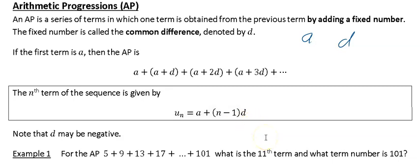So what we mean by this — for example, if you were looking for your 17th term, U_17 would be equal to A plus 16D.